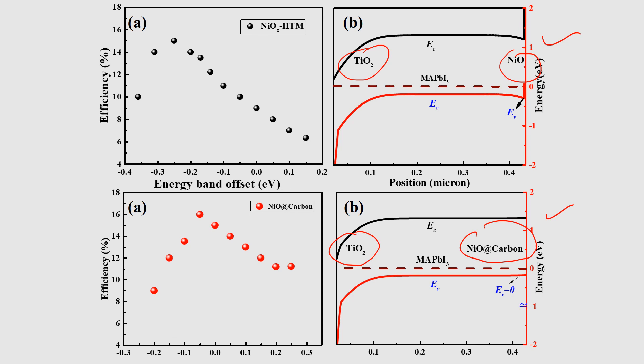The simulation can also show how efficiency changes with respect to energy band offset. For example, if there is a larger mismatch between the hole transporting material and the perovskite, we may get lower efficiency, whereas a better alignment gives higher efficiency. This has been a brief introduction to AMPS and how we can get simulations. In the coming videos, I will teach in detail how to use this simulation software.